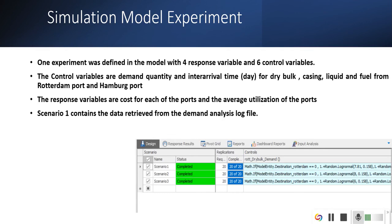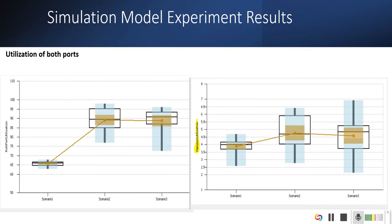Now the experiment. One experiment was defined in the model with four response variables and six control variables. The control variables are demand quantity and interarrival time for dry bulk, casing, liquid, and fuel item from Rotterdam port and Hamburg port. The response variables are cost for each of the ports and average utilization of the ports. Scenario one contains the data extracted from the actual data file, from the demand analysis log file, and the rest of the two scenarios contain random data which are generated.